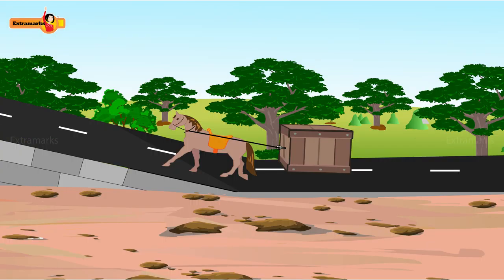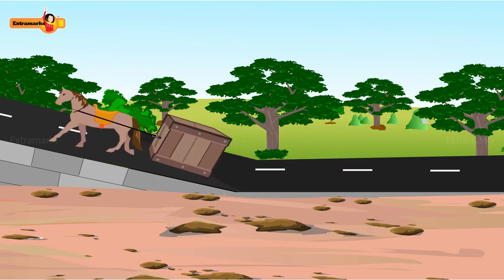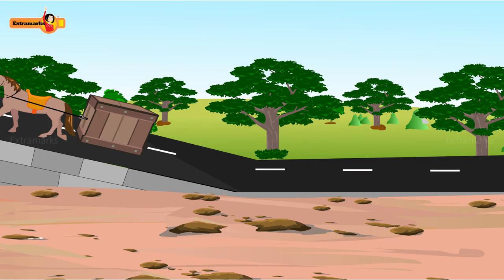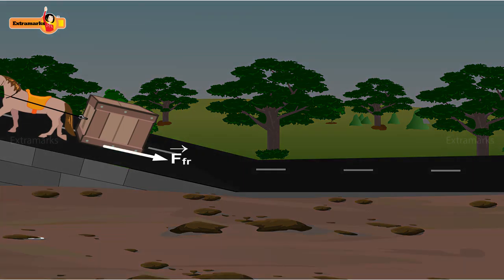Usually the work done on an object can be due to various forces acting on it. Some of these forces can be conservative or non-conservative. Look at this example in which a horse is pulling a block on an inclined plane. The four different forces — namely the frictional force, the force exerted by the horse, normal force, and the force of gravity — act on the same block.